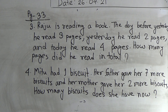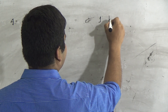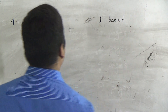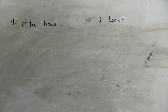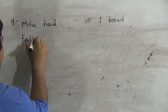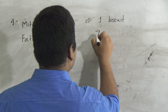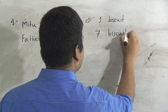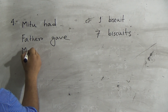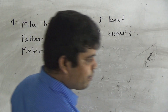So write here: 'Meetu had one biscuit.' Dear student, you must write the digit under the digit. Meetu had one biscuit. Then father gave seven biscuits. And mother gave two biscuits.